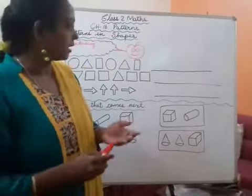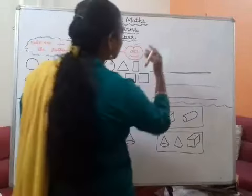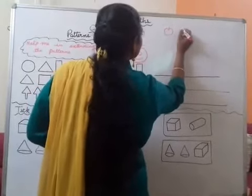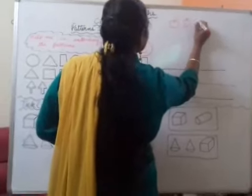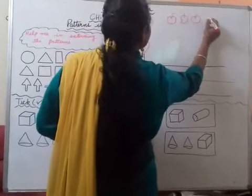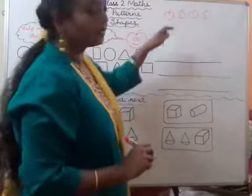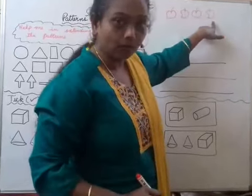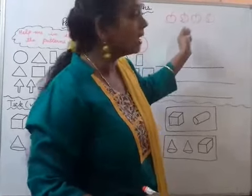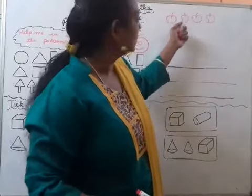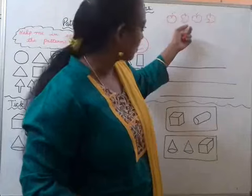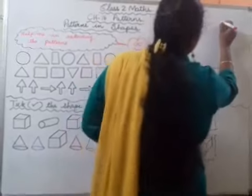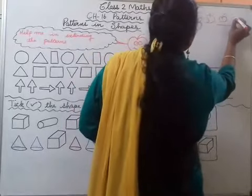Patterns kya hota hai? I will give you a small example. I am going to draw — watch it carefully. What I have drawn? Apple, then mango, apple, mango. This is a pattern. First apple hai, us ke baad mango, then apple, mango. Us ke baad kya hai ga? Yes, apple, then mango.